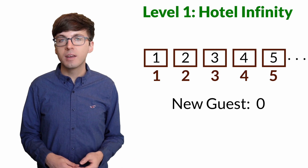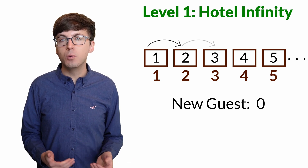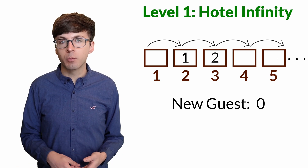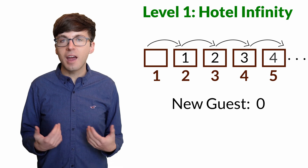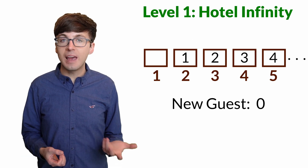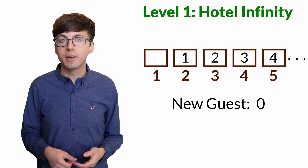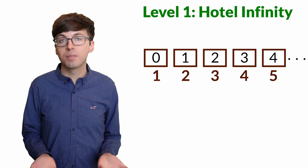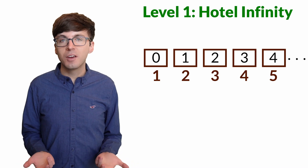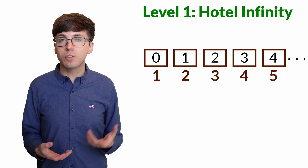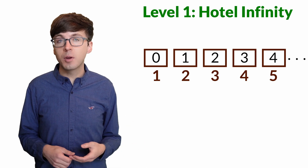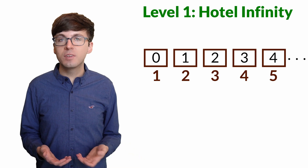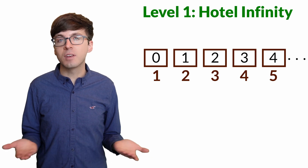We'll have to move the guests around a bit. Let's tell every guest to move down one room. Number one will stay in room two, two will stay in room three, and so on. Every natural number still has a room — n is staying in room n plus one — but now room number one is empty, so we can have zero stay there. We've shown that the natural numbers starting with one take up exactly the same number of rooms as the whole numbers starting with zero, so we say that these two sets of numbers have the same cardinality.